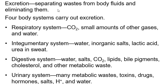Excretion isn't done only by the kidneys. The respiratory system excretes CO2. Sweat contains sodium, potassium, and lactic acid. The digestive system gets rid of bile, cholesterol, other metabolic waste, CO2, salts, and water. The urinary system handles metabolic waste — toxic substances, ammonia, drugs, hormones you no longer need, excess salt, and hydrogen ions, which is why urine is acidic.